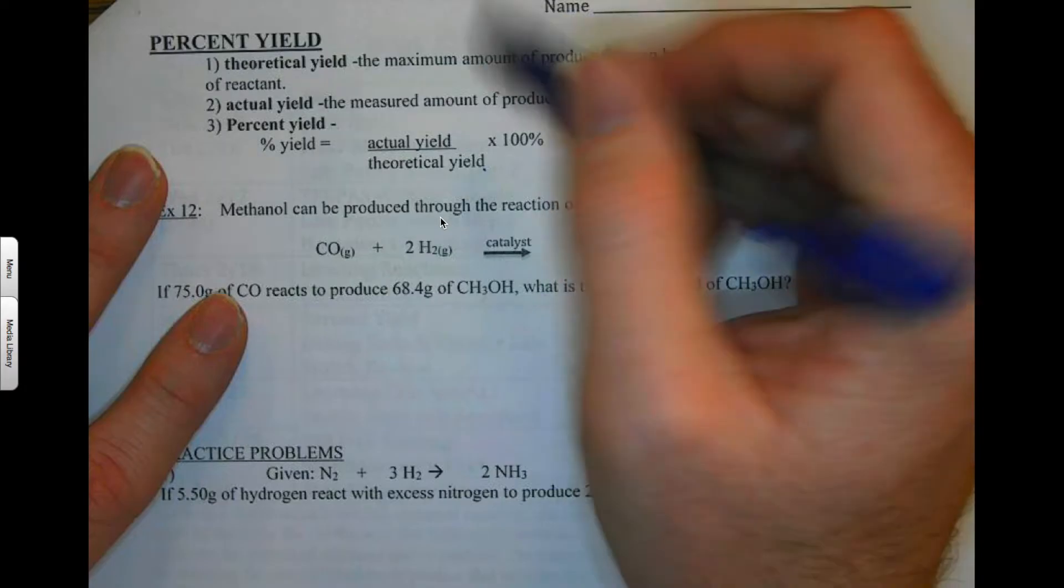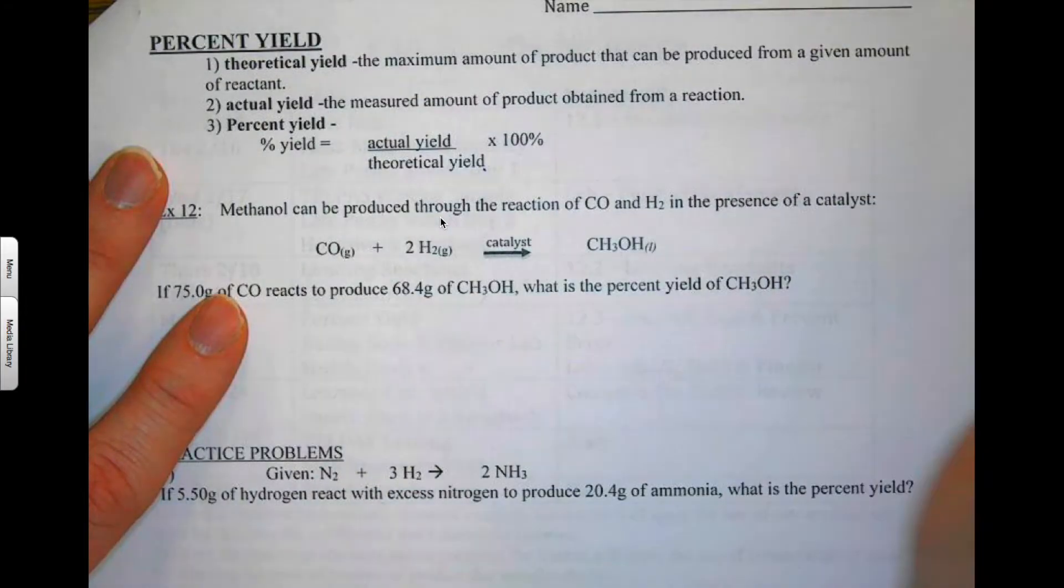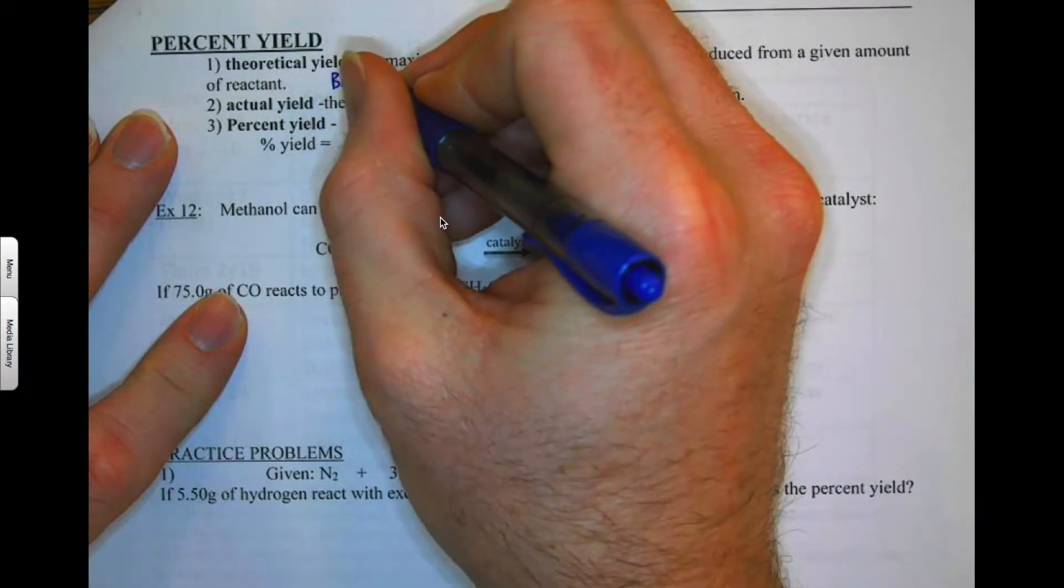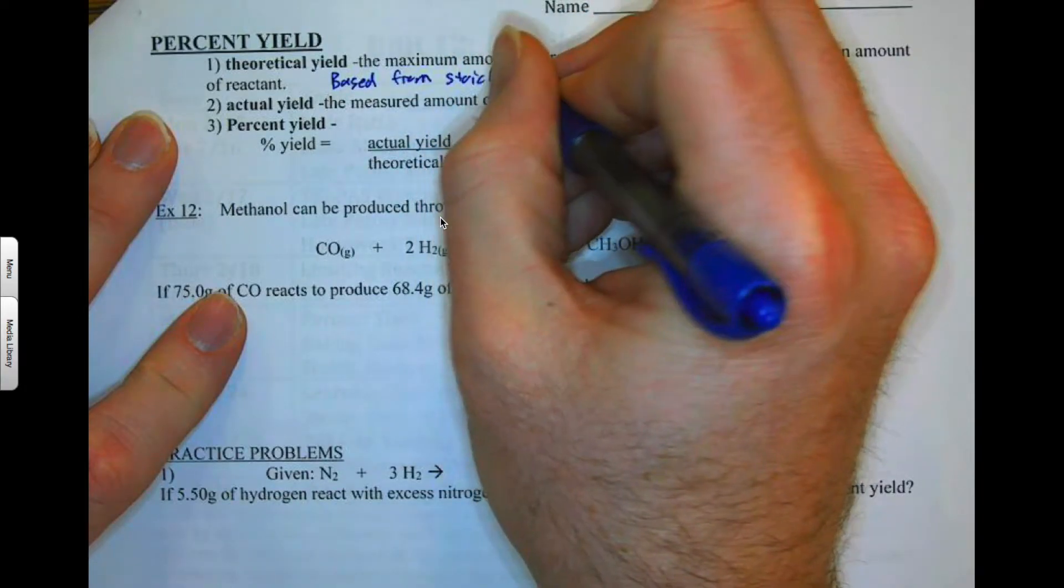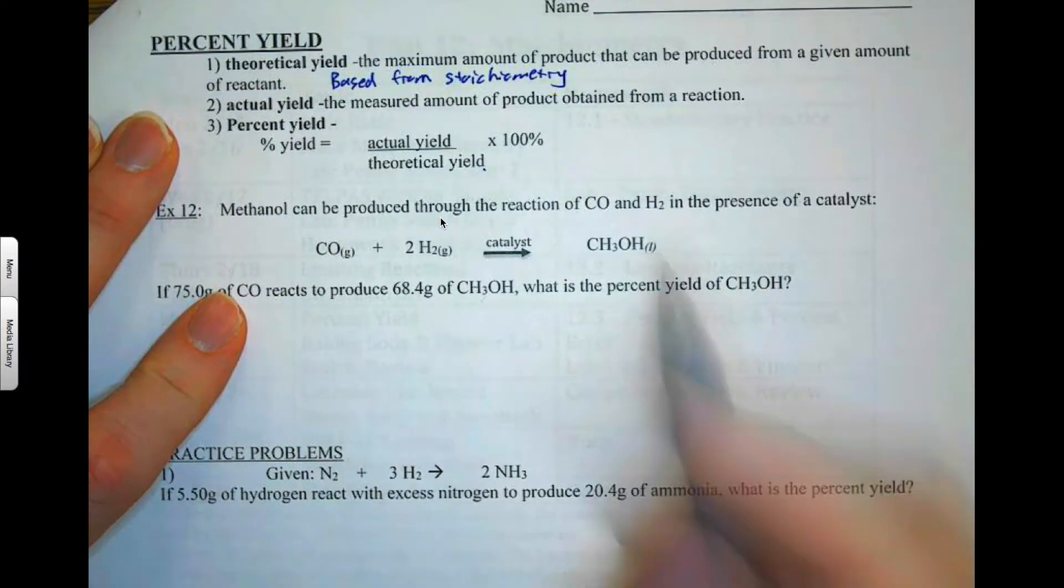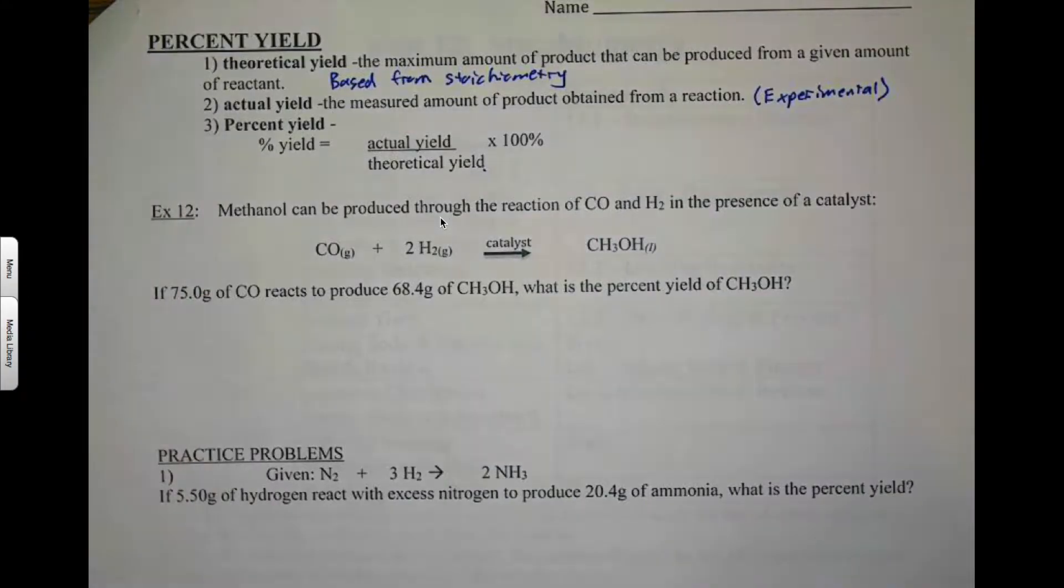So the theoretical yield is that maximum amount of product that can be produced from a given amount of reactant. And so this is based from stoichiometry. So you have to do a little bit of stoichiometry to find this one, the theoretical yield. Now the actual yield is the measured amount of product obtained. Now sometimes this is called the experimental yield, or it's basically what you just found in your experiment, what happened in real life. And so the percent yield is just the actual over the theoretical.